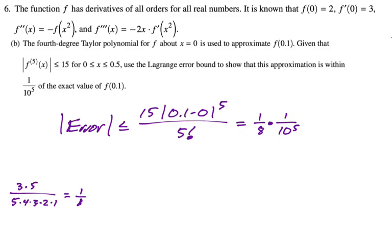One eighth times one tenth to the fifth is definitely smaller than one over ten to the fifth. And because of that, we have shown what needed to be shown. So we are, I think, done with that part. Hopefully that's all satisfactory.